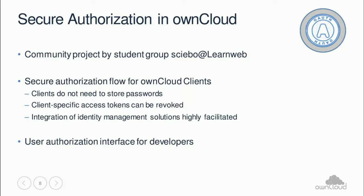OnCloud OAuth is primarily used to connect clients in a secure way, and this provides many benefits. Clients do not need to store passwords. Previously, clients stored passwords using key rings of the respective operating systems. With OAuth, clients don't even get to see the user passwords anymore.